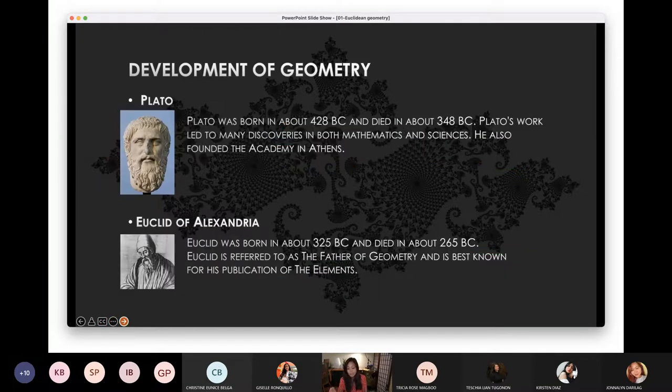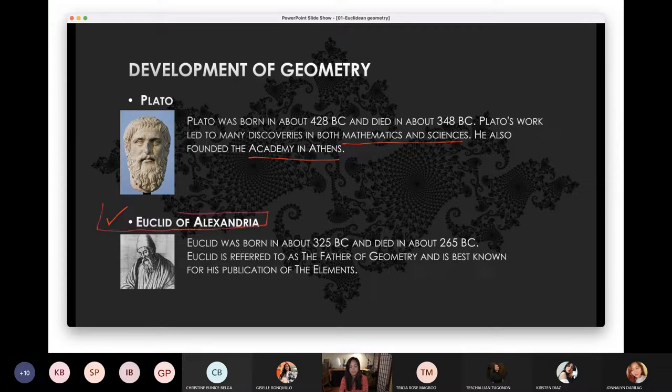The next one is you're familiar with this, Plato. Plato is another person who has a high contribution in philosophy and in sciences, in literature. But he led many works that discover mathematics and science, discoveries in mathematics and sciences. He founded the Academy of Athens. The next one is the guy that we will be talking about today. We call him Euclid of Alexandria or simply Euclid. Euclid is known as the father of geometry.